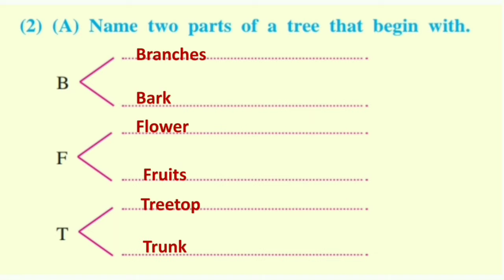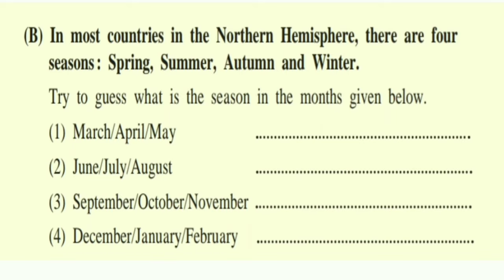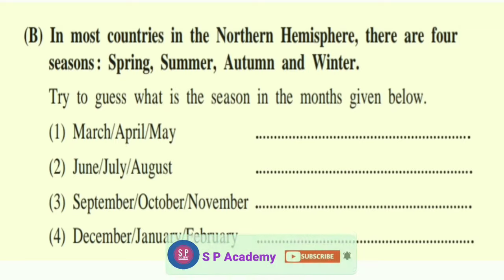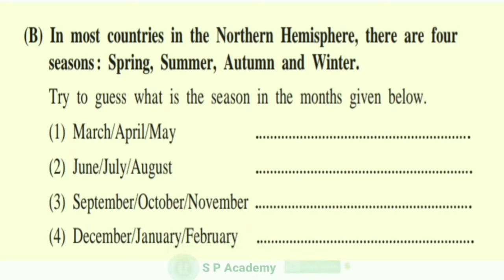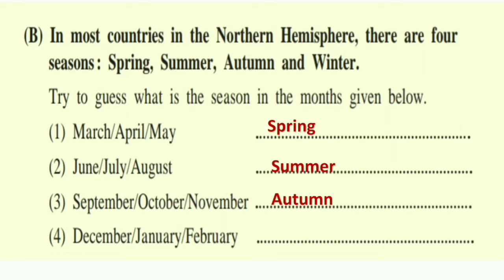In most countries in the Northern Hemisphere, there are four seasons – Spring, Summer, Autumn, and Winter. Try to guess what season falls in the months given below. Answer: 1. March–April–May: Spring. 2. June–July–August: Summer. 3. September–October–November: Autumn. 4. December–January–February: Winter.